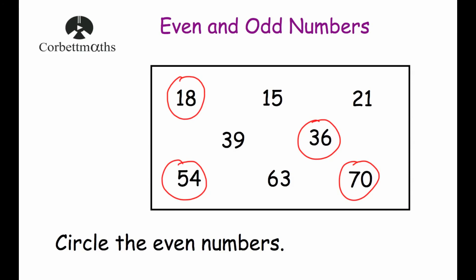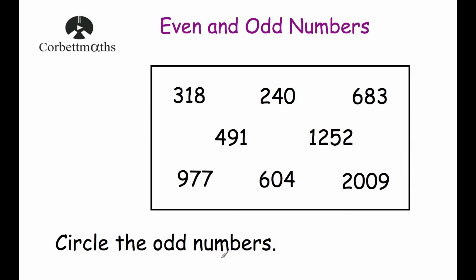Okay, let's have a look at another question with some bigger numbers. This time we've been asked to circle the odd numbers. Our numbers are 318, 240, 683, 491, 1,252, 977, 604 and 2009. The great thing is we only need to look at the number in the ones column — that last digit — to see if the number is odd or even. For odd numbers, we're going to end in a 1, a 3, a 5, a 7 or a 9.